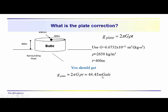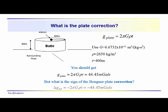Now remember, this would be the terrain effect. It adds in to the acceleration due to gravity measured at this location. But the observation is corrected for the influence of the plate. So we have to remove the plate. So the sign of the plate correction then, it would be negative, negative 44.45 milligals.